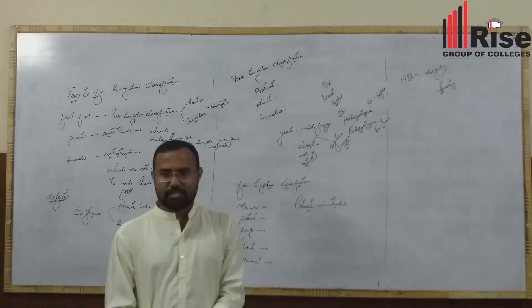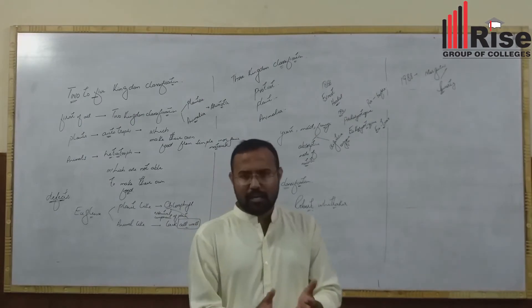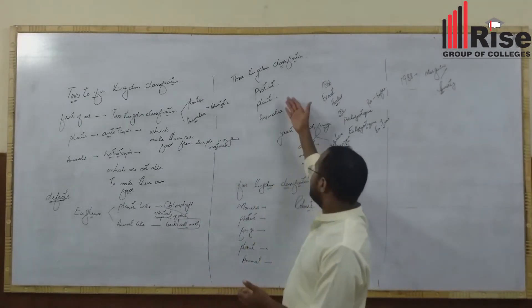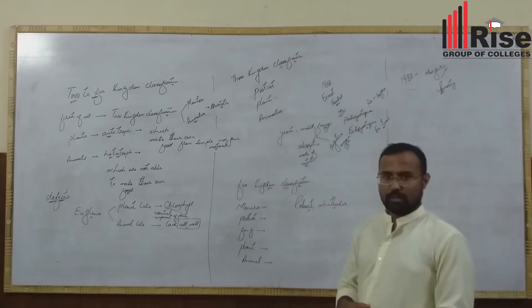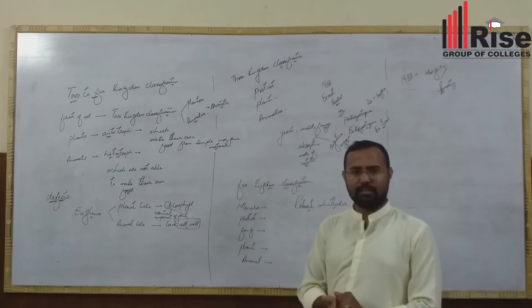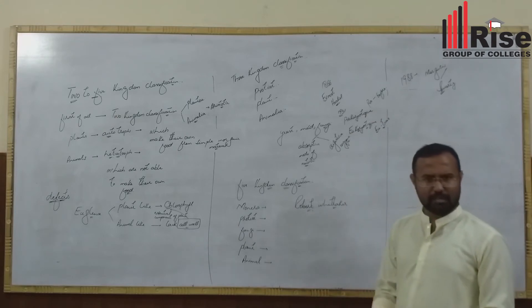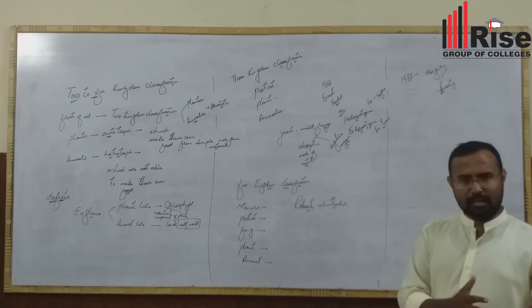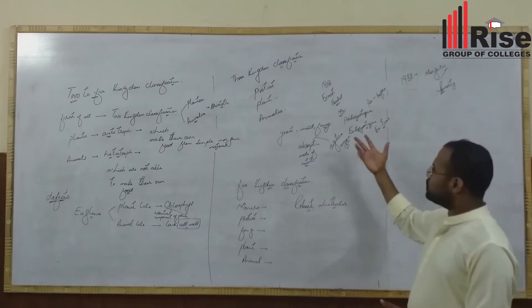There is advancement with three kingdom classification, proposed by Copeland. We need to understand the terms prokaryotic and eukaryotic. Prokaryotic means before nucleus - no true nucleus. Eukaryotic means true nucleus.